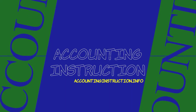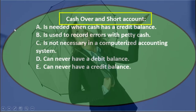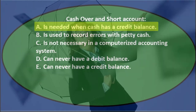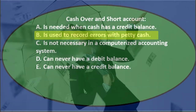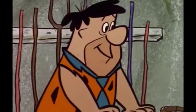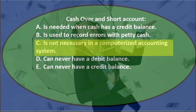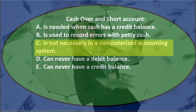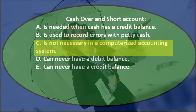First question. Cash over short account: A is needed when cash has a credit balance. B is used to record errors with petty cash. C is not necessary in a computerized accounting system.